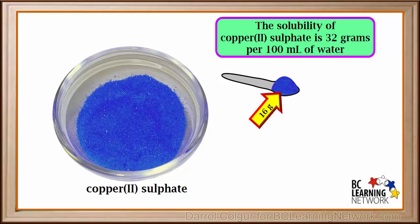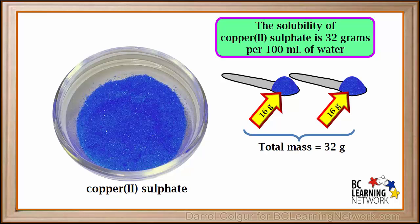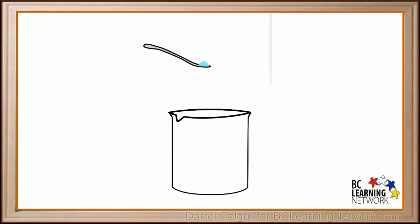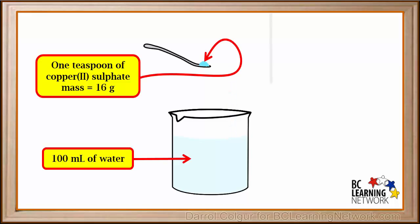A heaping teaspoon of copper sulfate has a mass close to 16 grams, so 2 teaspoons of copper sulfate have a total mass of 32 grams. We'll start with 1 teaspoon of copper sulfate, which has a mass of 16 grams. We also have a beaker and a stirring rod. Now we'll add 100 milliliters of water to the beaker — water is colorless, but here we'll color it a very light blue just so you can see it.